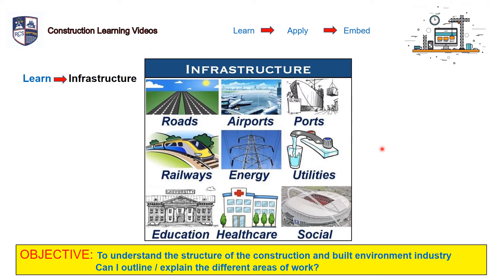Next, infrastructure — which on your sheet is actually the fourth one down, but it's important to understand it before we talk about civil engineering. Infrastructure is the basic physical structures required for a society to operate, such as bridges, roads, power supply, and utilities such as water and drainage. Imagine your life without infrastructure — without roads, airports, utilities, energy. Imagine your life without school, for example. Infrastructure is the basic physical structures required for a society to operate, such as those you can see in the picture.